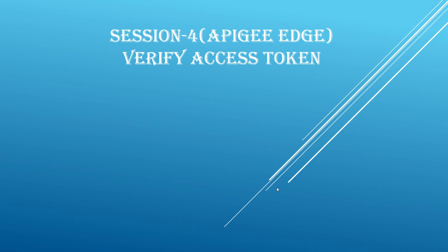We have discussed that once we have an access token generated from Apigee Edge after providing credentials, for subsequent API calls we can make use of this access token — we need not pass credentials on each and every subsequent request. So how do we access an endpoint by providing the access token, and how do we verify whether the provided access token is valid or not? This is very important because we should not allow a request to the backend API when the request does not have a valid access token.